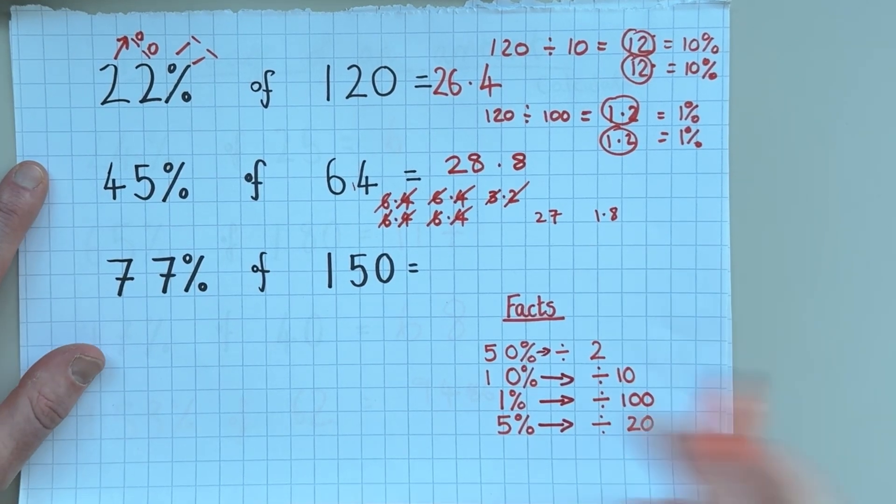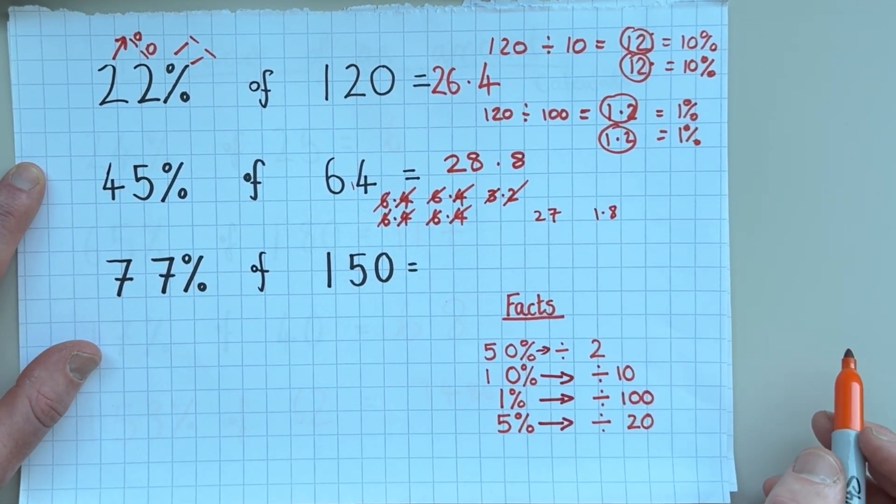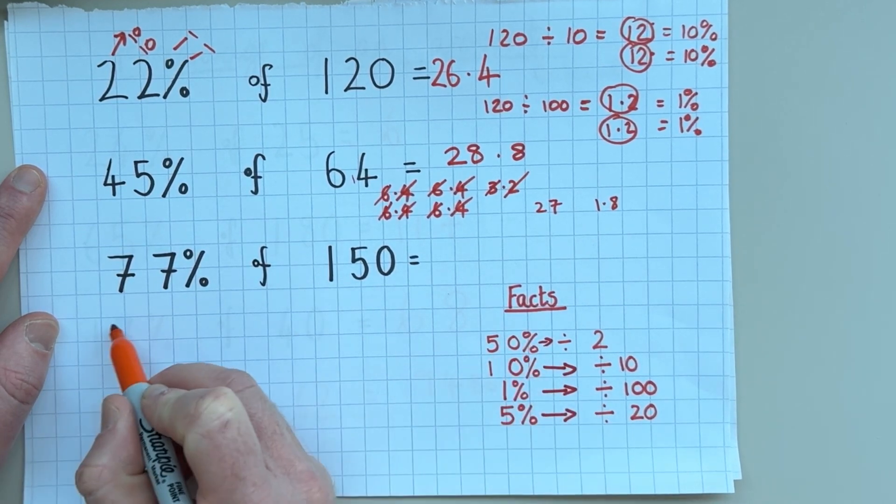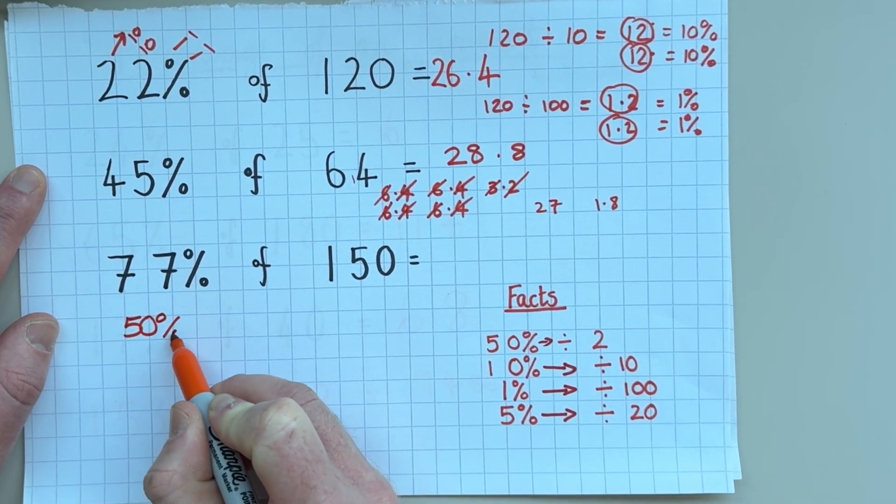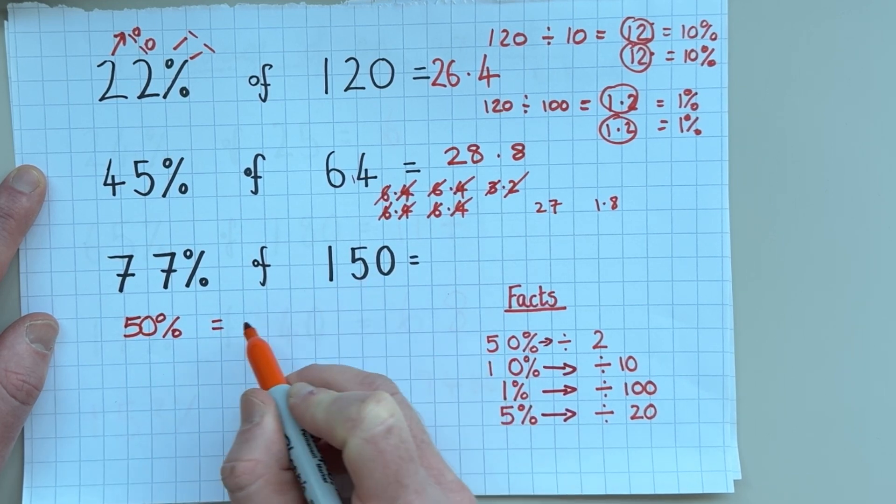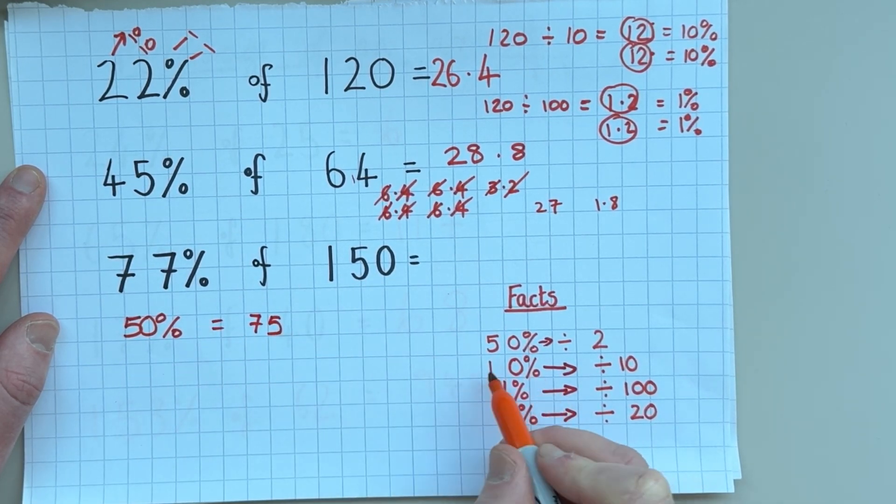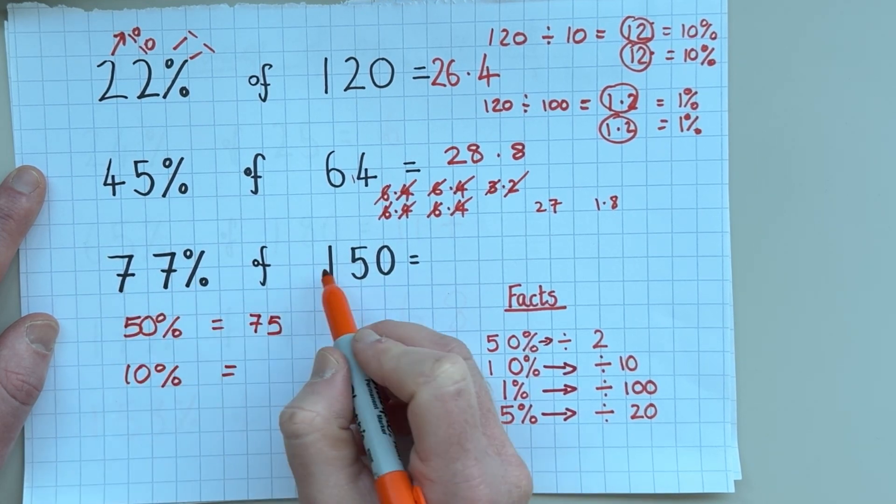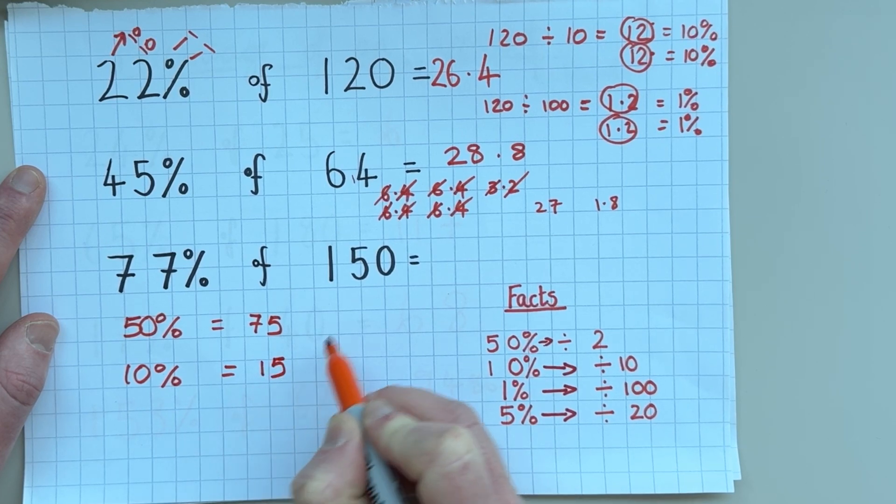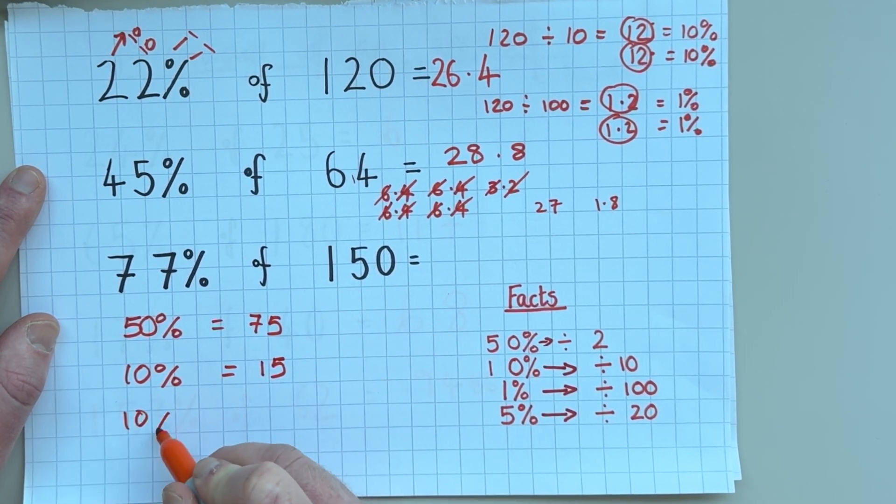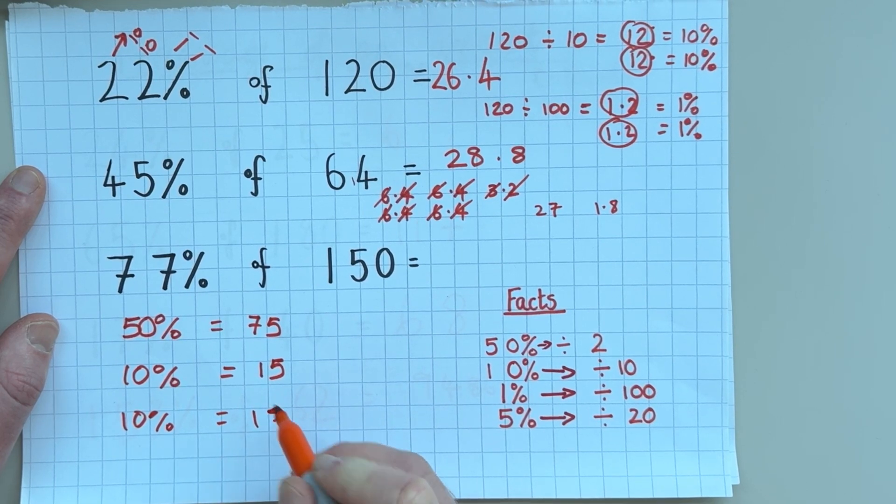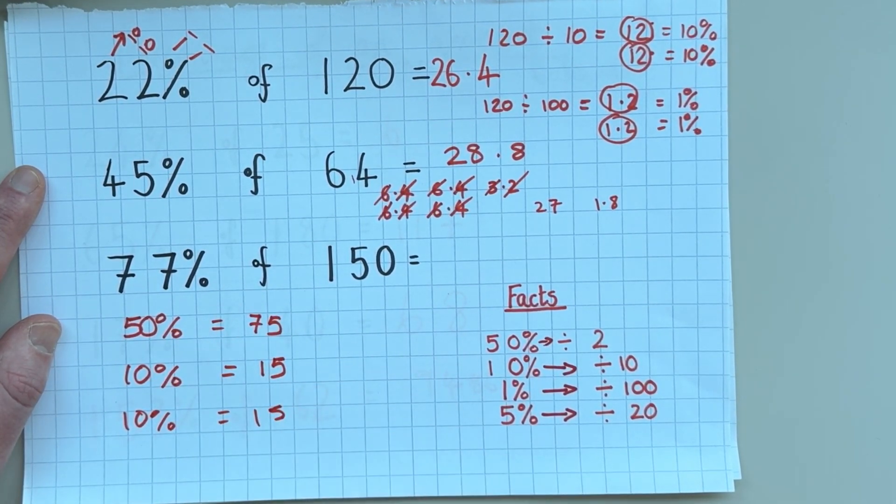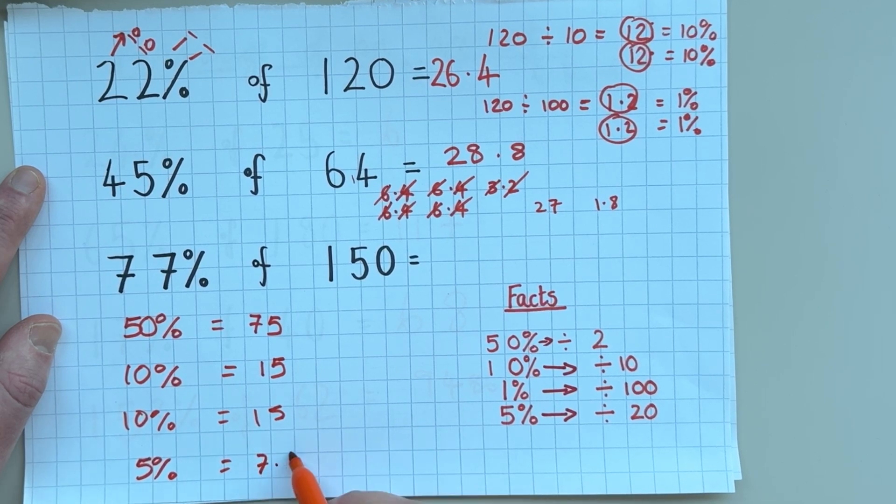Hope you're still with me there. Let's take a look at the last one, which is 77% of 150. So I'm going to work out 50%. So 50% of 150. So half of 150 is 75. Then I'm going to work out 10%. So 10% of 150 is 15 because I've just divided it by 10. Another 10% is 15 also. So now I've got 50, 60, 70%. So I need 5%. So that's half of 10%. So 5% must be 7.5.